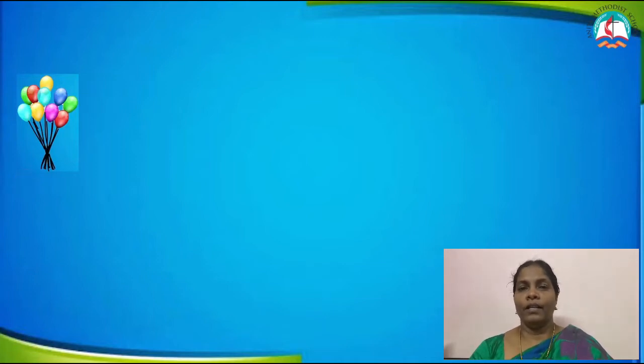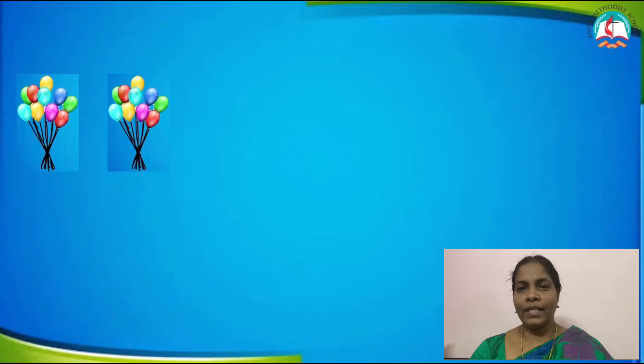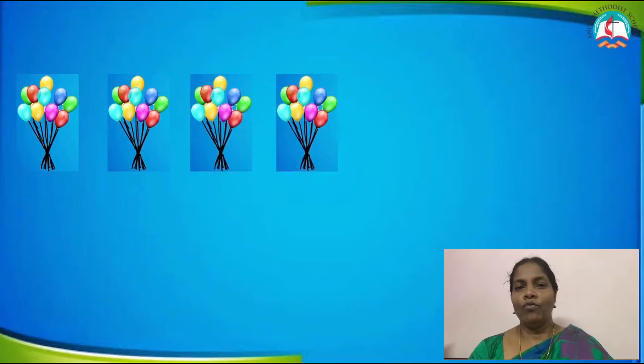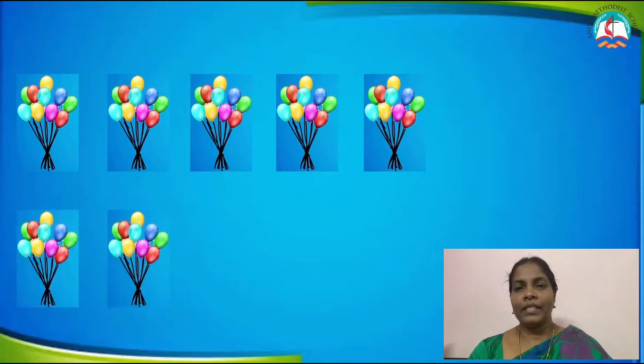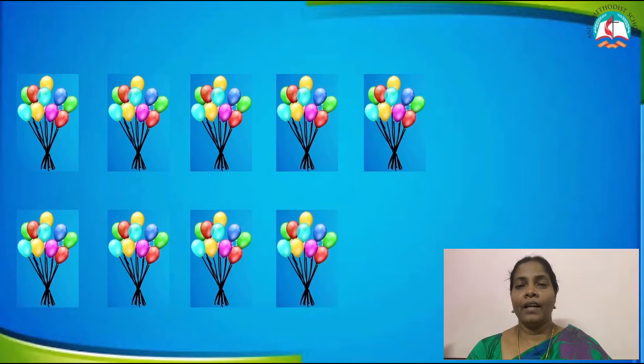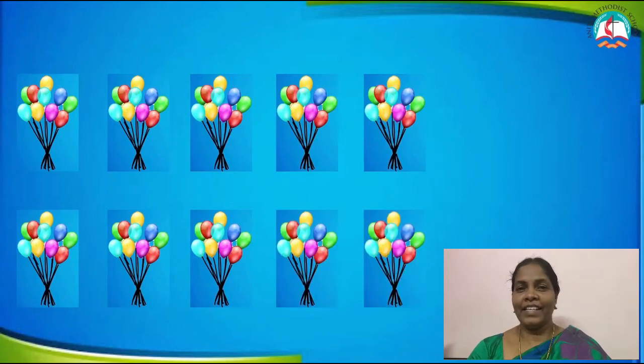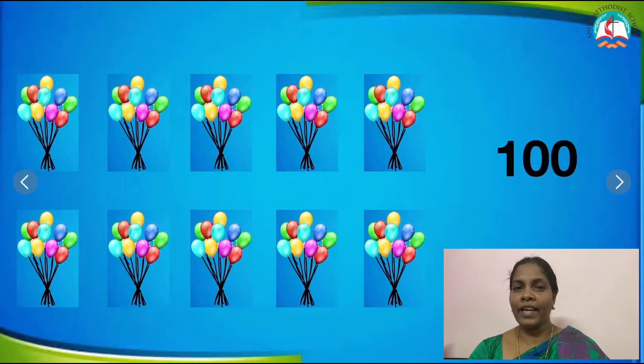Okay, before that, shall we see the bunches, children? Each bunch has 10 balloons. Shall we count in 10s? Because each bunch has 10 balloons, we can count in 10s: 10, 20, 30, 40, 50, 60, 70, 80, 90, 100. So we now have 100 balloons. Now can you tell me how many bunches are there? Count and tell fast.